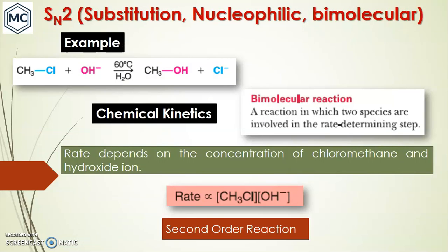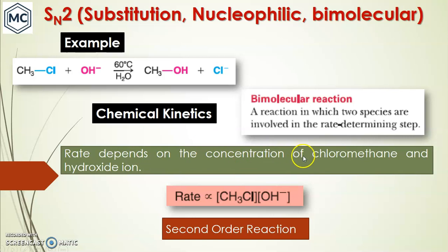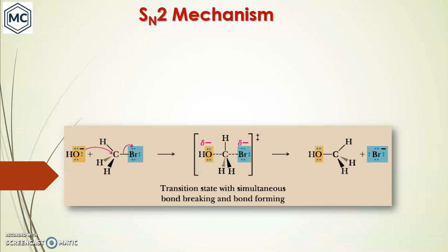Let us discuss SN2 — substitution nucleophilic bimolecular. An example of SN2 is the reaction of methyl chloride with a strong nucleophile, hydroxide, to give methanol. Chemical kinetic studies revealed that the rate of the reaction depends on both the concentration of chloromethane (the substrate) and hydroxide (the nucleophile). Because rate depends on both, it is called a bimolecular reaction — second order kinetics.